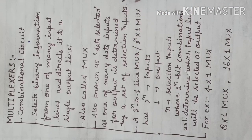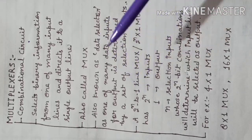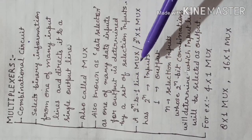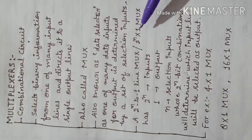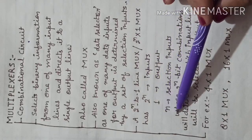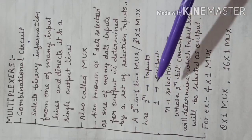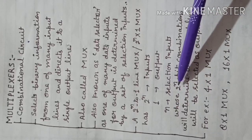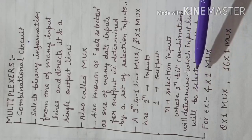Input aur output ke alava multiplexer mein aur input hota hai jise kehte hain selection input, aur the purpose of selection input is to select one out of many inputs as output. For example, consider a 2^n to 1 line multiplexer — we can write it as 2^n cross 1 multiplexer. In this, there are 2^n inputs, 1 output, and n selection inputs. The n selection inputs have 2^n binary combinations, and these combinations decide which input line will be selected as output.